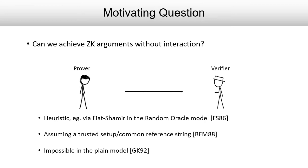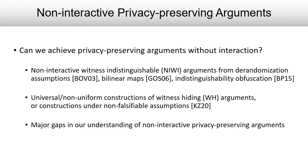One could begin by asking whether zero knowledge arguments are achievable without interaction. While this is possible via heuristic constructions that can be proven secure in idealized models, or if we assume that players have access to a trusted common reference string, they actually turn out to be impossible to realize in the plain model when players don't have access to a trusted third party. So an important question is: can we achieve privacy-preserving proof systems that are not zero knowledge, that satisfy somewhat weaker privacy properties, and that still suffice for applications in the plain model without access to trusted setup?